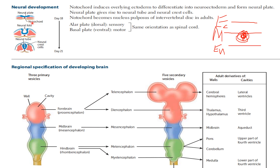The neuroectoderm forms the neural plate. Now we have the neural fold, and it is getting folded and closing up. The neural plate gives rise to the neural tube and neural crest cells. Here we can see it's all closed up and folded — it is now a neural tube, and the leftovers are the neural crest cells. This development happens from day 18 to day 21.